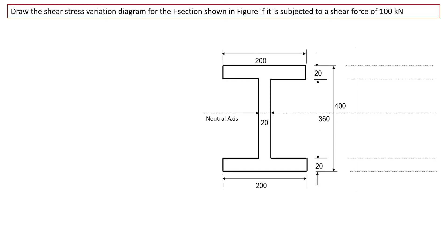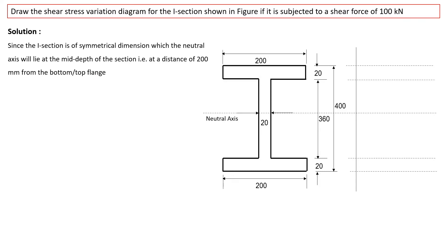This symmetric I section is subjected to a shear force of 100 kN. Both the top flange and bottom flange are 200 mm wide. The web has a thickness of 20 mm, the overall depth of the section is 400 mm, and the top and bottom flanges each have a thickness of 20 mm.